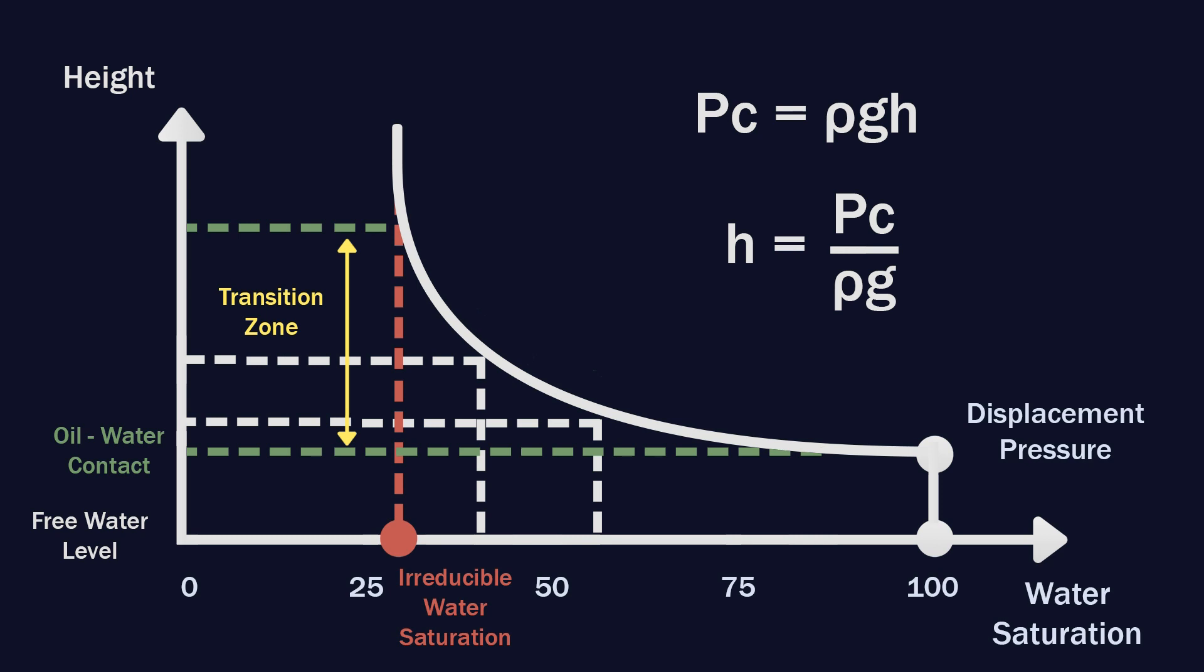The height that exists after reaching the irreducible water saturation is called the oil zone. It is the zone of the formation which is actually drilled. That's because water cannot be produced in this zone due to the adhesion forces with the rock grains.